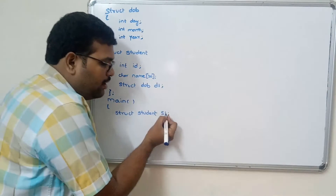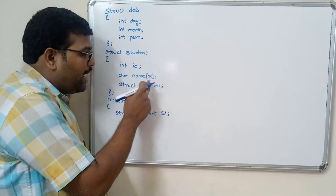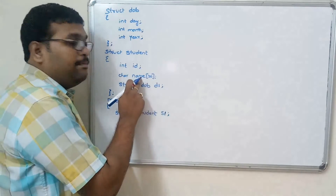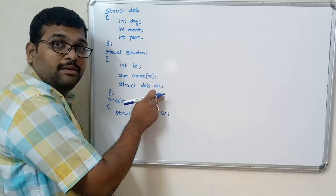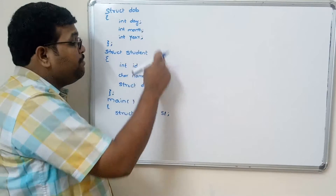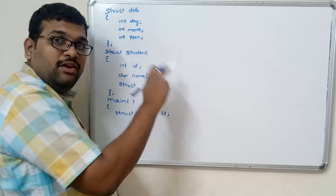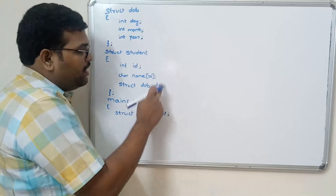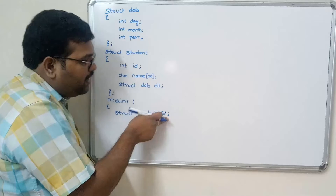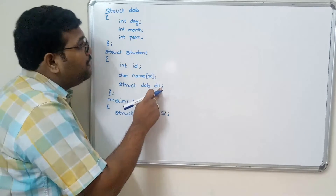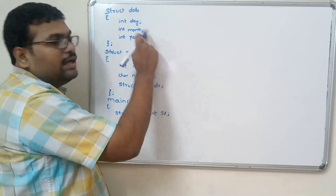To access id: `s1.id`. To access name: `s1.name`. To access d1: `s1.d1`. Since d1 is itself a structure variable of type dob, it follows the dob structure and has three members. To access those members we again use the dot operator: `s1.d1.day`, `s1.d1.month`, `s1.d1.year`.